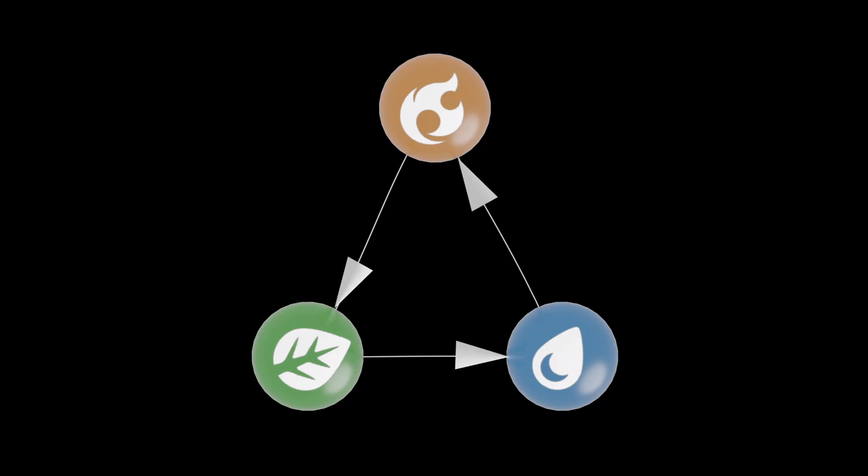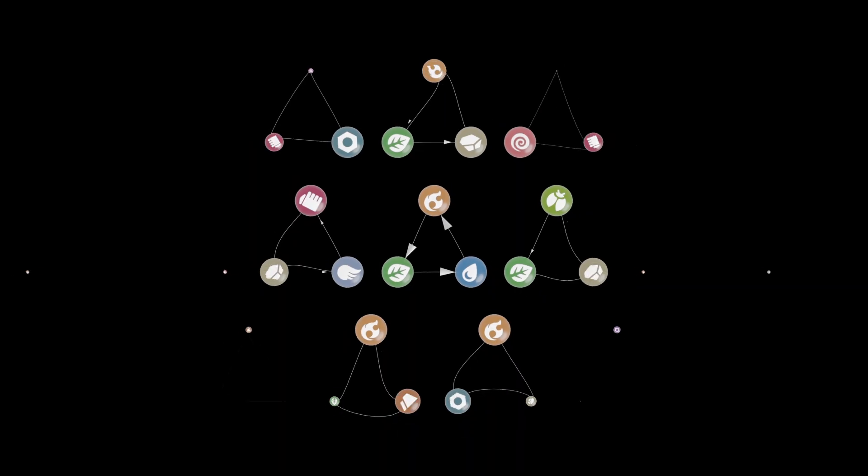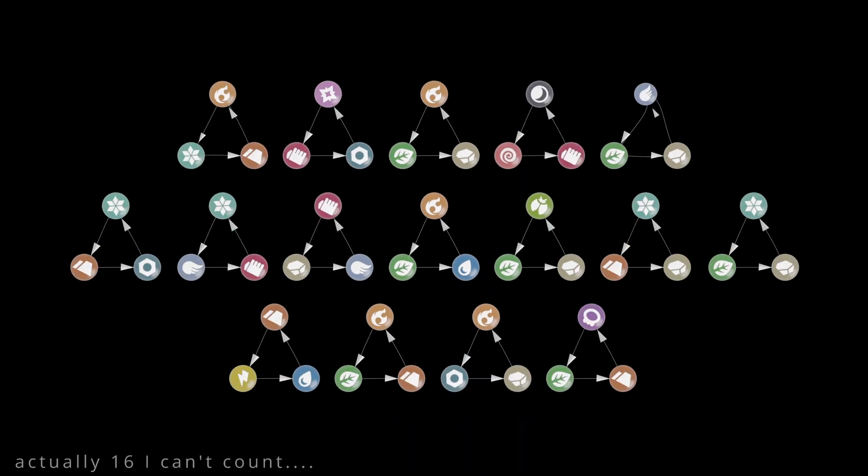Wow, am I a video game critique YouTuber now? Anyway, the question is, is water, fire, and grass the only such triangle? Well, no. Using network analysis, we can find that any of these 15 could serve the same purpose. I do wonder if Nintendo is aware of this. I, for one, would like to see a water, ground, lightning trio.